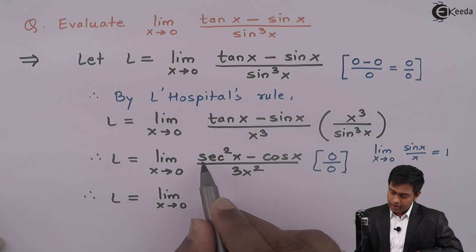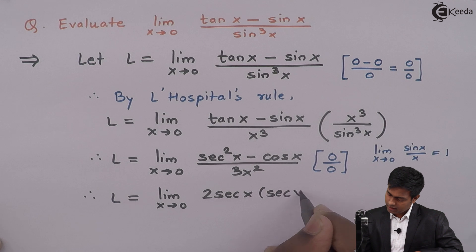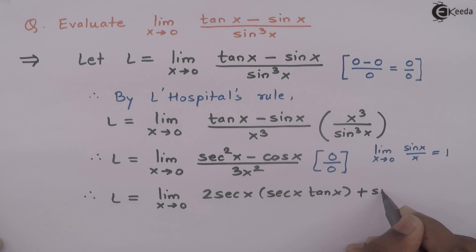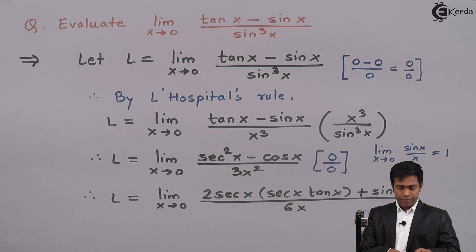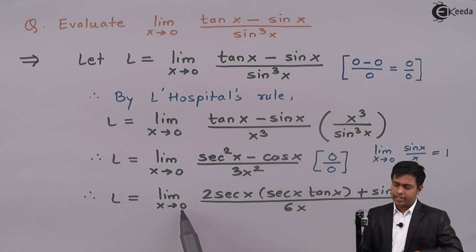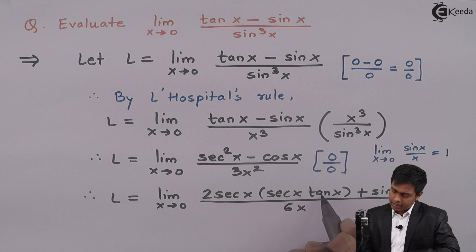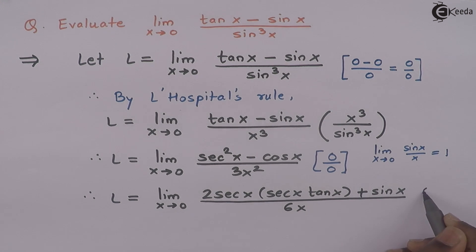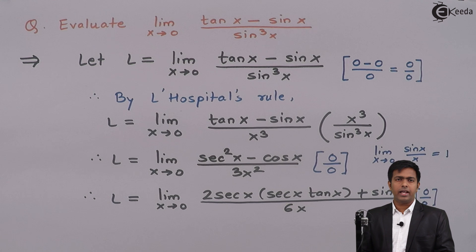Applying L'Hôpital's rule again: the derivative of sec square x is 2 sec x times sec x tan x, and the derivative of negative cos x is plus sin x, upon the derivative of 3x square which is 6x. Substituting x as 0: tan 0 is 0 so that term becomes 0, and sin 0 is 0, giving 0 in the numerator, and 6 times 0 gives 0 in the denominator. We are again getting 0 upon 0, indeterminate form, so we must apply L'Hôpital's rule once more.